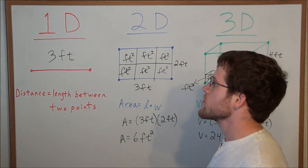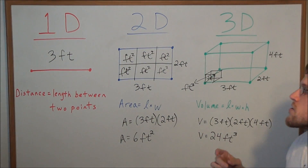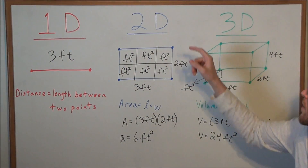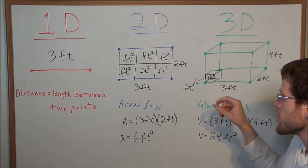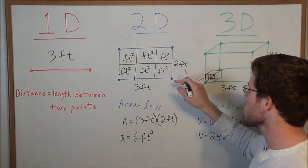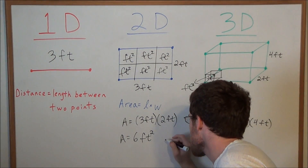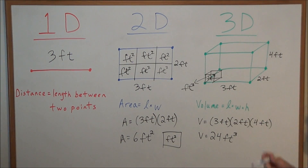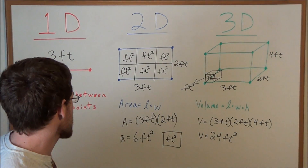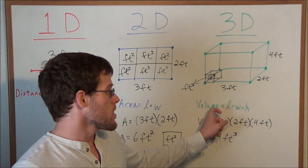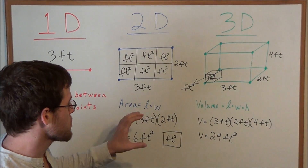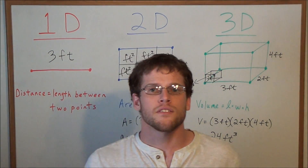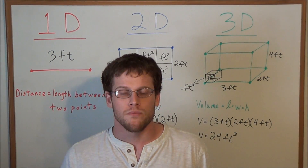To summarize the difference between distance, area, and volume: distance is one-dimensional and we measure it with a straight line. Area is two-dimensional and we measure it with individual little squares — square feet, or feet to the second power. Volume is three-dimensional and it takes area, which was length times width, to length times width times height, and we measure volume with individual little cubes. Thank you all for watching and I hope this was helpful.